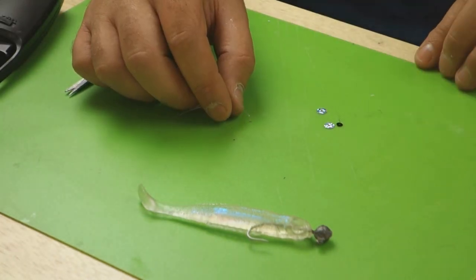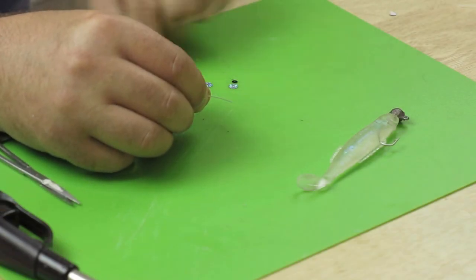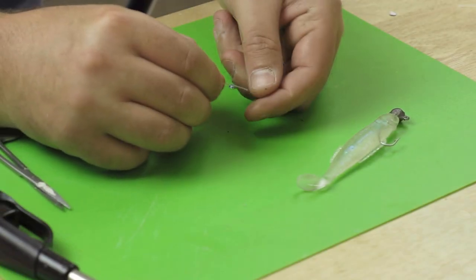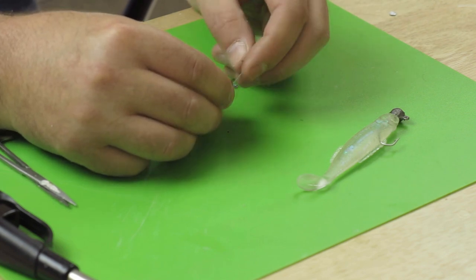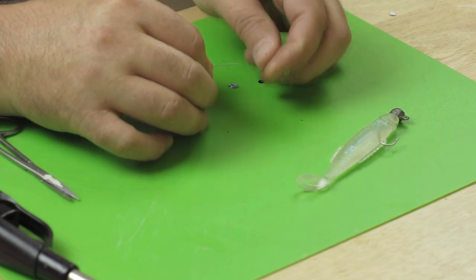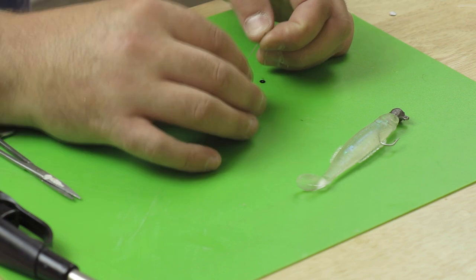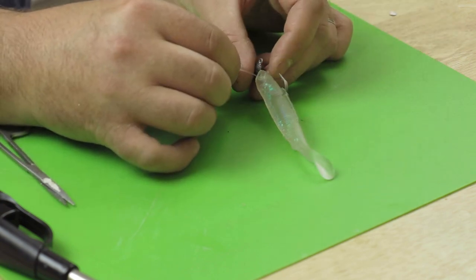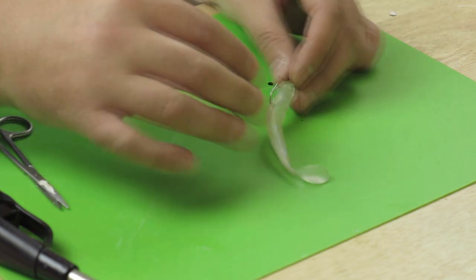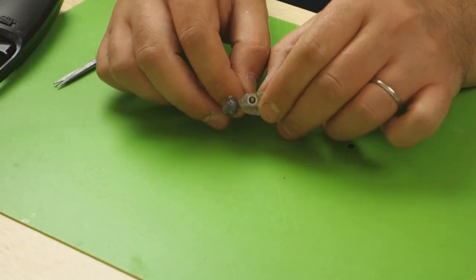So to begin with, I'm going to thread one of the black sequins on first. Then a silver. I'll get my fish back. I'm going to pull that right the way through.